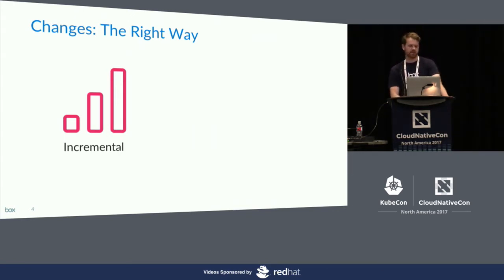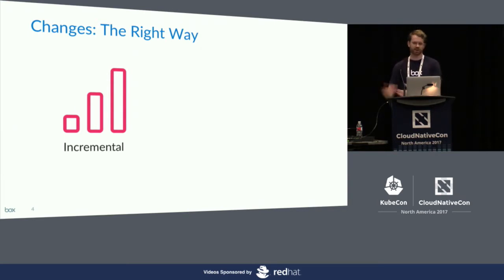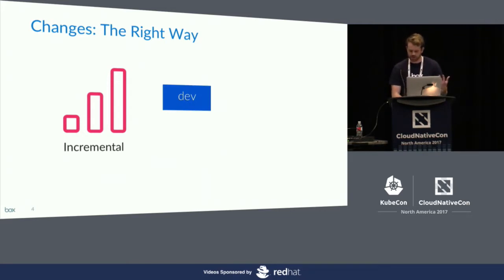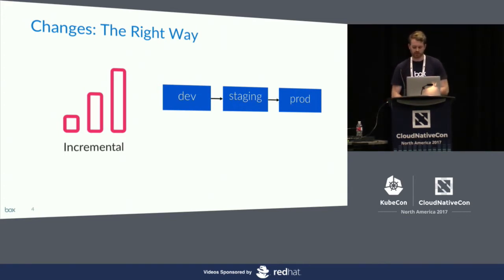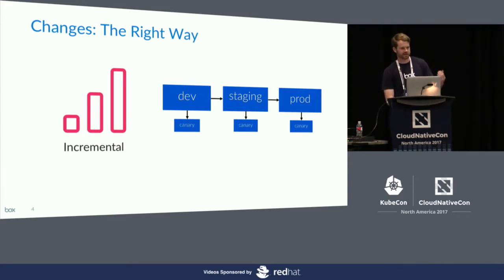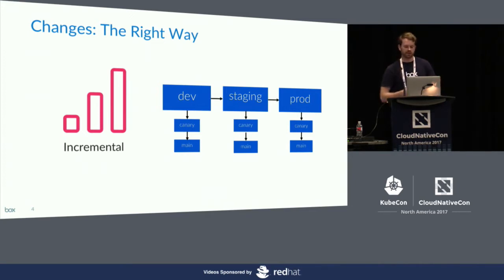In practice, most of you are probably familiar with having a production environment that handles live traffic. Before we make changes all the way to production, we roll through intermediate environments: first dev, then staging, then production. But within each of those environments, we also roll out incrementally — we do a canary deployment to a small subset of instances, and if things look good, we do our main deployment to the rest. This whole incremental change control process really mitigates a lot of risk and reduces the chance that bad changes make it all the way out to our full production deployment.